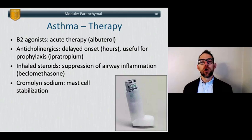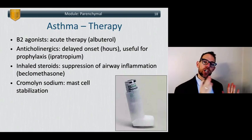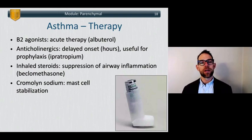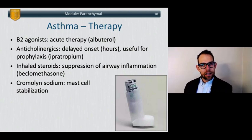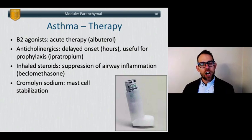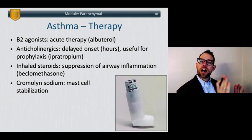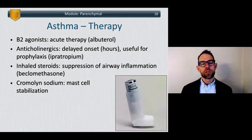What is our therapy for asthma? Think about acute, intermediate, and long-term preventive therapy. Acutely, you give a beta-2 agonist such as albuterol, which causes bronchiolar smooth muscle relaxation. In the intermediate phase, anticholinergics such as ipratropium have a delayed onset over hours and are useful for prophylaxis, not for an acute asthma episode. Inhaled steroids such as beclomethasone are for chronic maintenance — chronic decrease and suppression of airway inflammation — and are not first-line therapy for an acute episode. Finally, cromolyn sodium results in mast cell stabilization and is also long-term maintenance therapy, not for the acute phase.